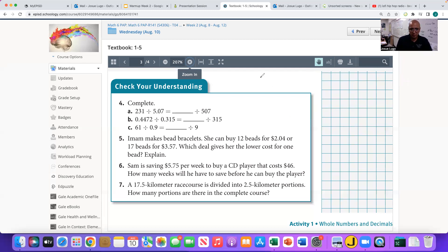What about B? We have 0.4472 divided by 0.315, and that is equivalent to something divided into 315. Again, ladies and gentlemen, let us focus on this left side. Let me write this into our division box.